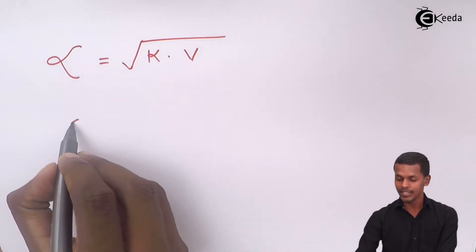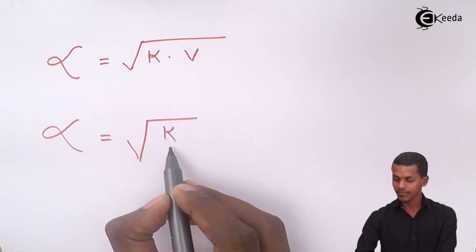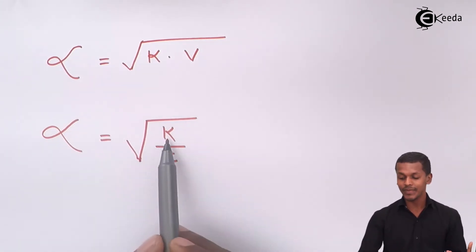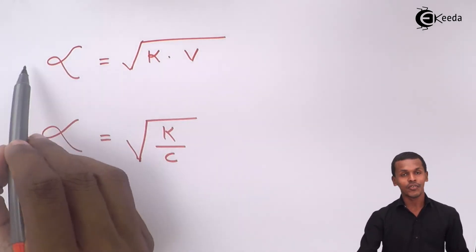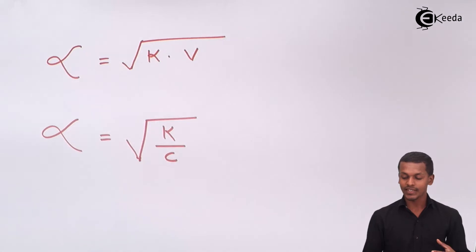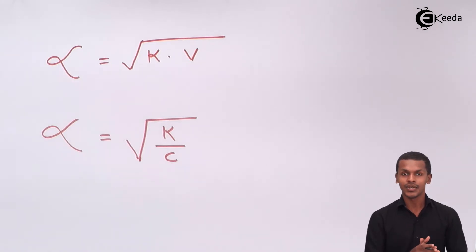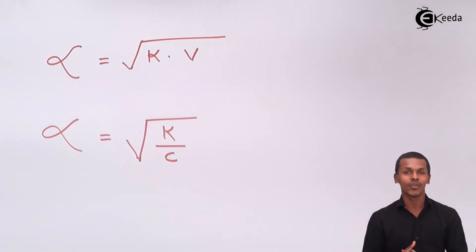The degree of dissociation alpha is inversely proportional to the square root of the concentration, keeping the dissociation constant K the same. This is what we have to prove — the expression for the Oswald Dilution Law for the weak electrolyte.